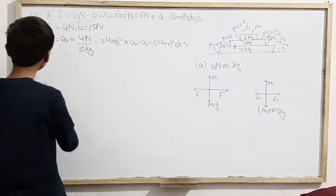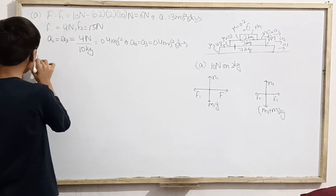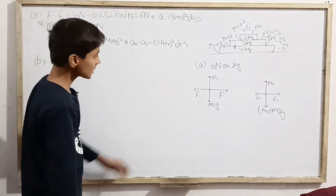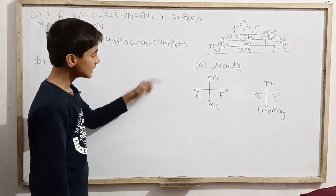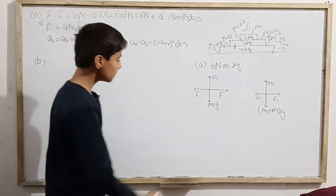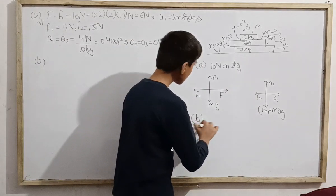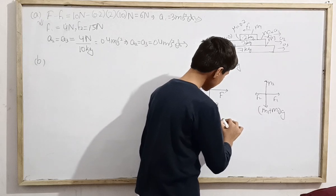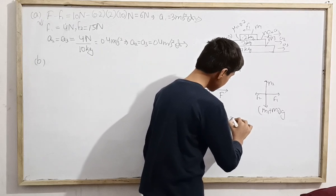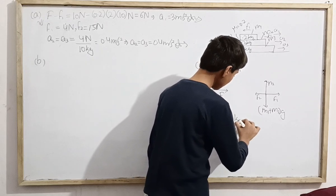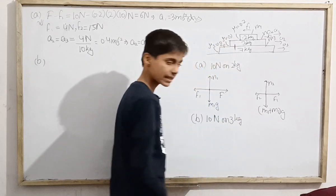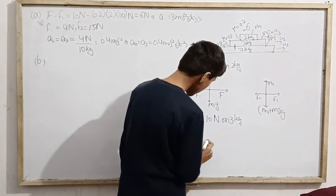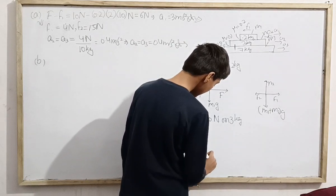That is our second answer. Now let's look at part B. Part A is solved. For part B, let's make the free body diagram for the 3 kg block, representing it as a point.